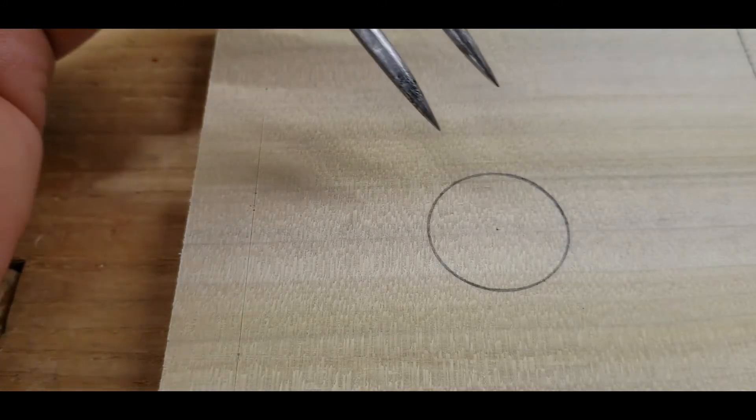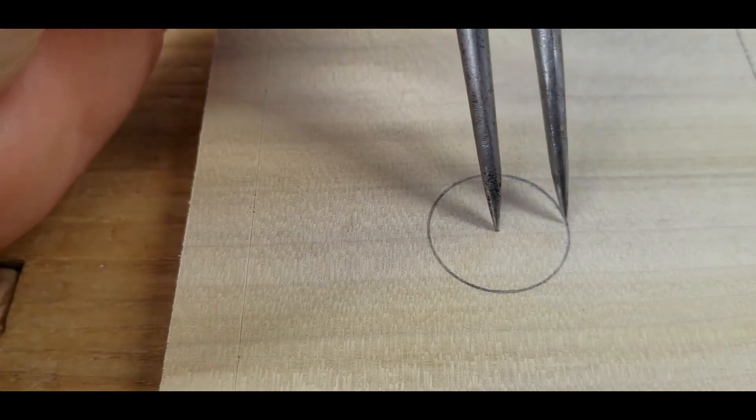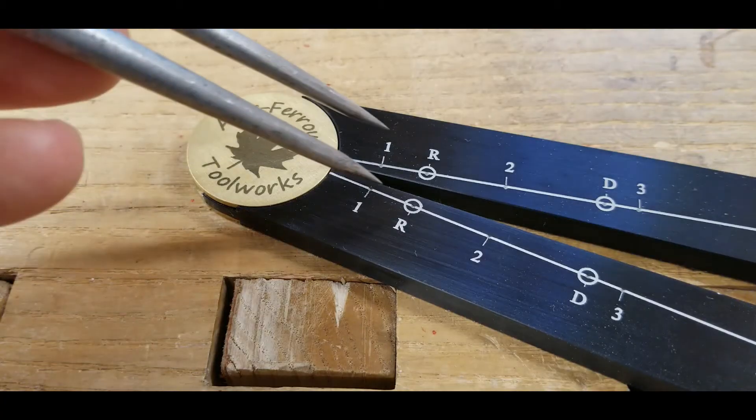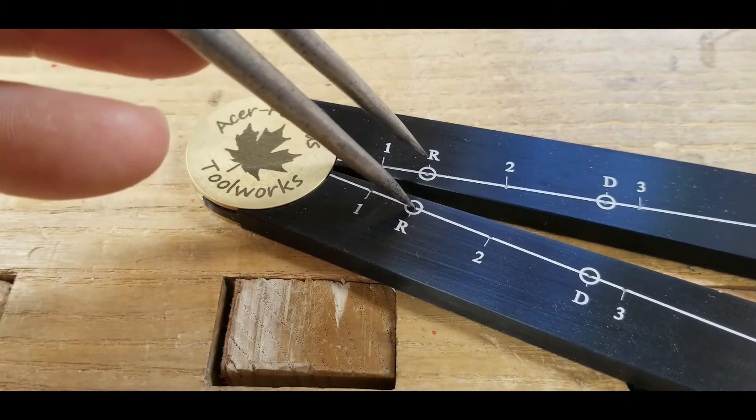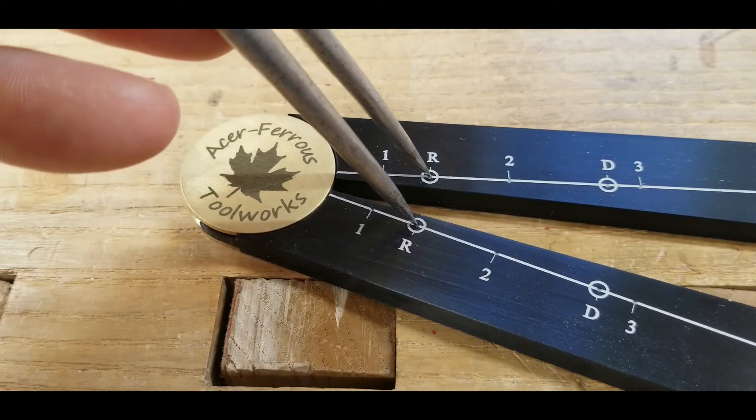Let's do an example. I'm going to set my dividers here to the radius of this circle. Next, I'll set the sector using my dividers on the R mark on the scale.